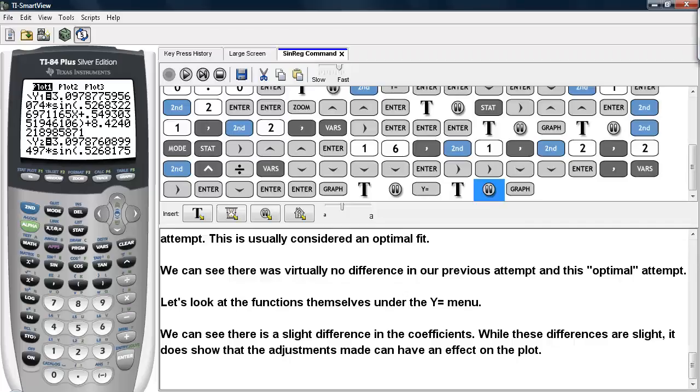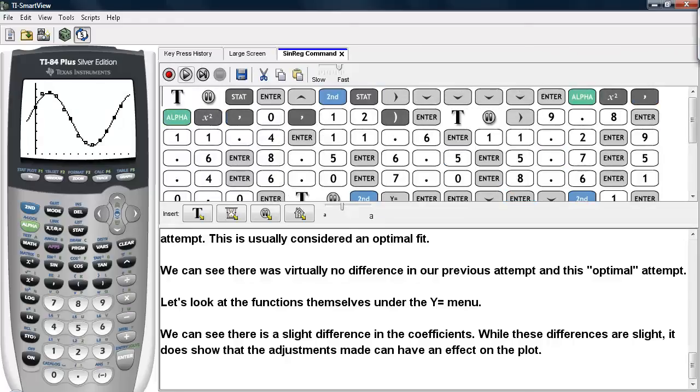So if we look at the graph again we can see that there's no difference. And this is how you can use the sinreg command to fit data that appears to be periodic using a sine function on the TI-83/84 calculators.